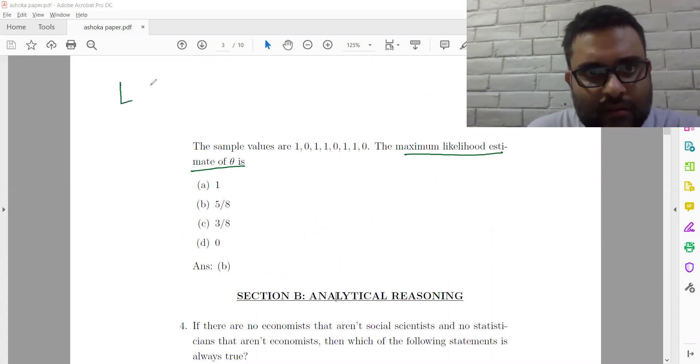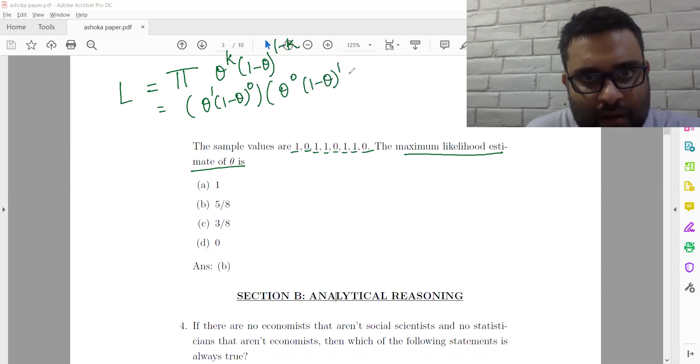So, let L be the maximum likelihood function. That's basically a product of theta to the power k into 1 minus theta to the power 1 minus k. Now, the k values for the 8th sample are 1, 0, 1, 1, 0, 1, 1, 0. So, for the first one, it will be theta to the power 1, 1 minus theta to the power 0. For the second, it will be theta to the power 0 into 1 minus theta to the power 1, so on and so forth. And the last one will be theta to the power 0 into 1 minus theta to the power 1.